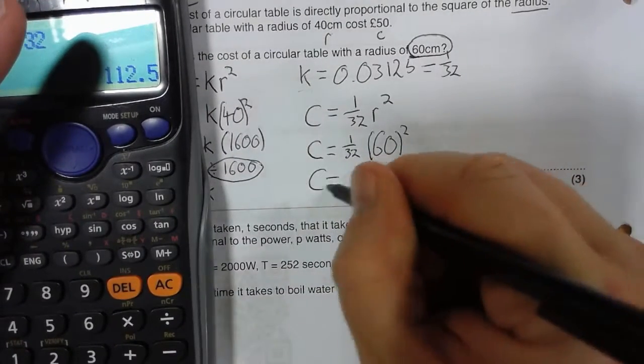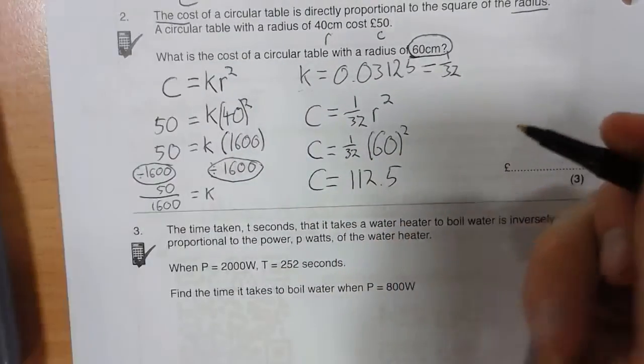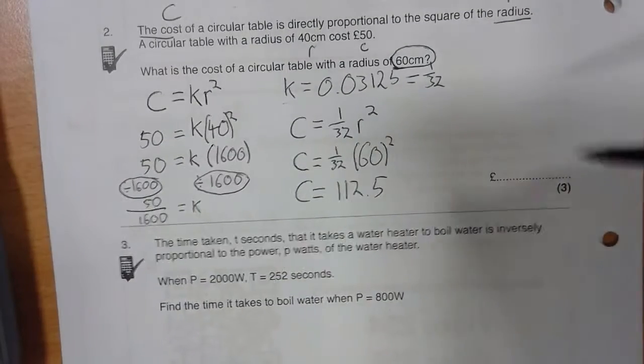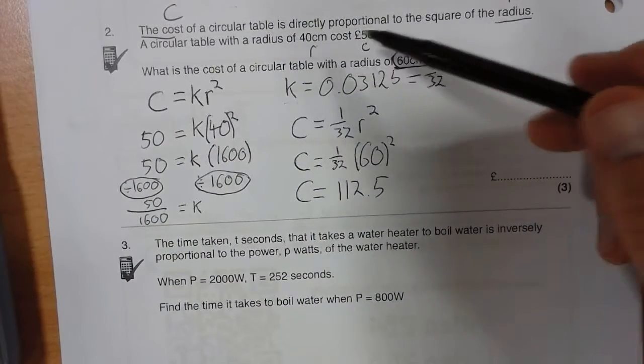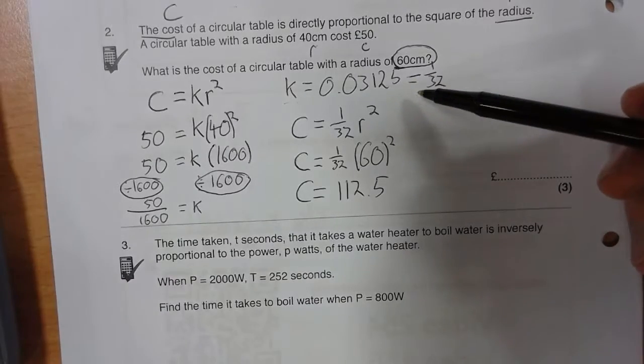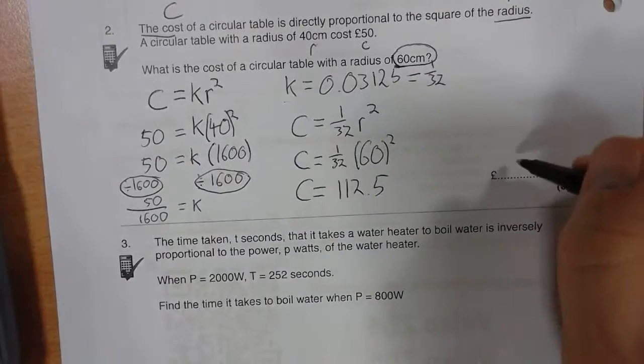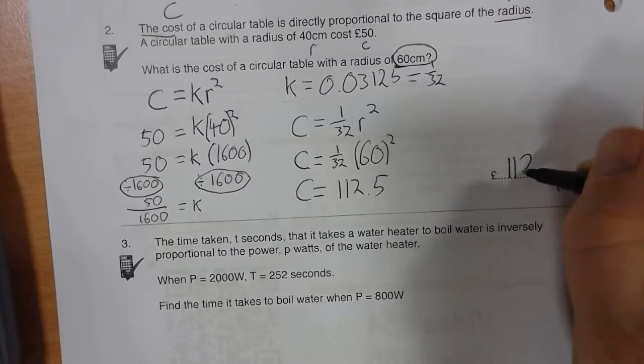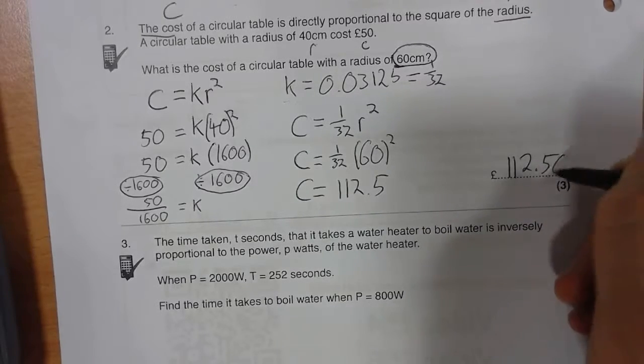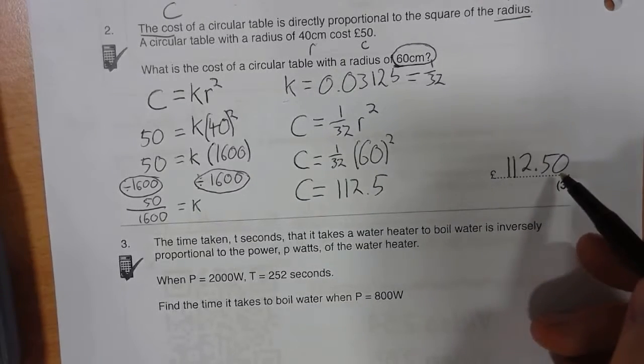So C equals 112.5. Does that sound relatively reasonable? Yes, it does. 40 centimetre radius was £50, so 60 centimetre radius, £112. That sounds reasonable. £112.50. Remember if it's money, I want to include all pence.